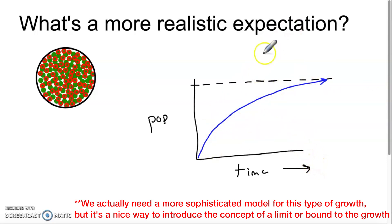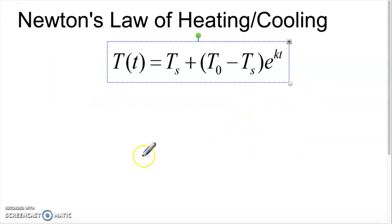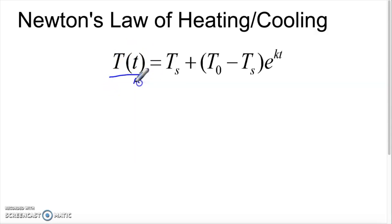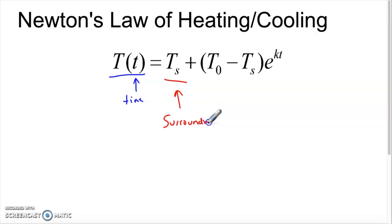This is the type of growth we're going to look at today, and this is what we get with something called Newton's Law of Heating and Cooling. Let me show you what the equation looks like and break down the different components. T(t) is the temperature at some period of time. It's a little confusing that we use capital T's and lowercase t's, so just be aware those are different — lowercase t is the actual time, your independent variable.